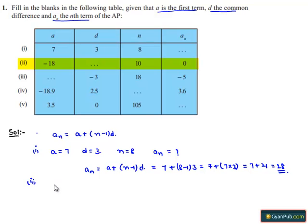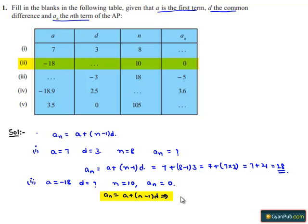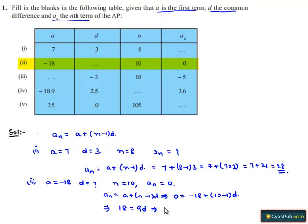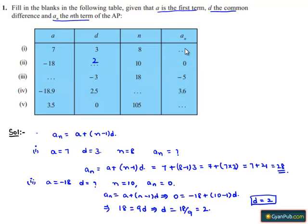Moving on to the second problem: a is given as −18, n is given as 10, and aₙ is given as 0. We need to find d. Using aₙ = a + (n−1) × d: 0 = −18 + (10−1) × d, which gives 18 = 9d, so d = 18/9 = 2. Therefore, the common difference is 2. The first blank is 28 and this blank is filled with 2.